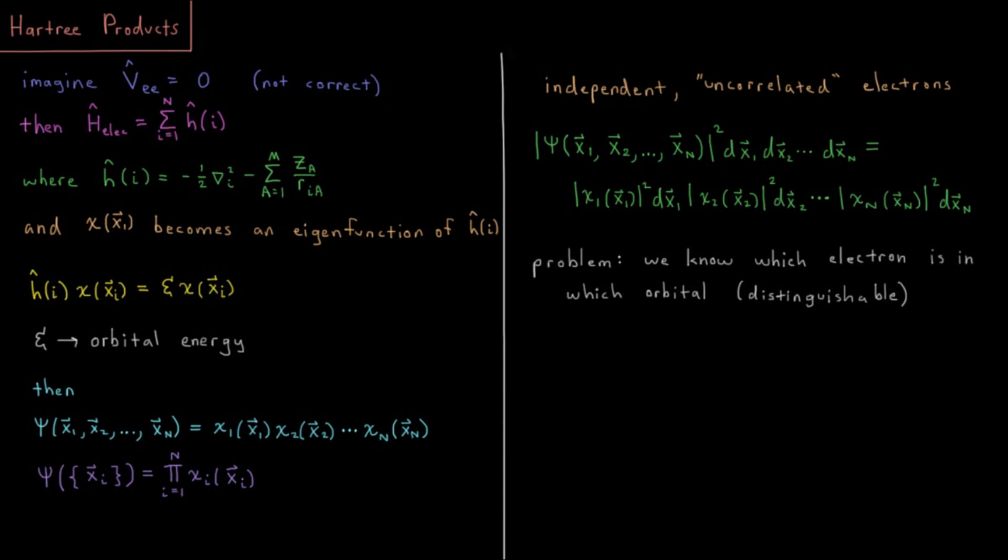In the previous video, we were discussing spin orbitals, which are wave functions for a single electron. In this video, we'll move towards what the wave function of a set of electrons would be, and the first step in that journey is to discuss Hartree products.